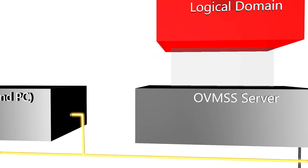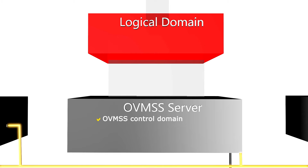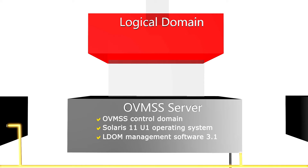The virtualization server must be provisioned as an Oracle VM Server for SPARC control domain with an Oracle Solaris 11 Update 1 operating system. It must also be running version 3.1 of the LDOM management software, which gets installed during provisioning. Any logical domains that you create on the virtualization server must also be provisioned with an Oracle Solaris 11 Update 1 operating system. The logical domain's operating system acts as a global zone.